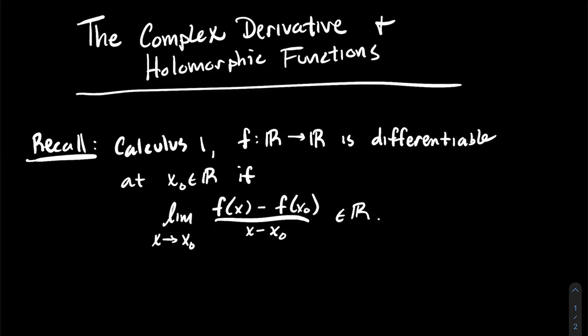Let's look at what that limit is doing. We're going to take the limit as x approaches x₀, and look at this quotient: f of x minus f of x₀ — that's the difference in the outputs — divided by x minus x₀, which is the difference of the inputs. You probably recognize that as the difference quotient.